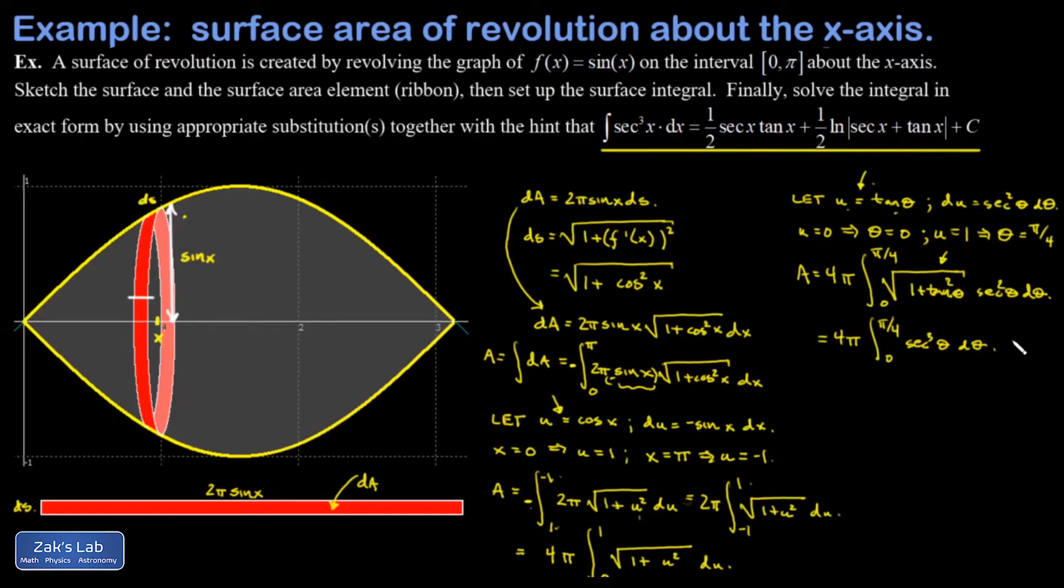Again, that integral itself is very non-trivial. It requires multiple applications of integration by parts. It's a really interesting integral in its own right. Here, we're just going to quote the formula for secant cubed. So I get 1 half secant x tangent x plus a 1 half natural log of the absolute value of secant x plus tangent x. And I'm evaluating this from 0 to pi over 4. First off, I can pull the 1 half out of this thing. So I end up with a 2 pi out in front.